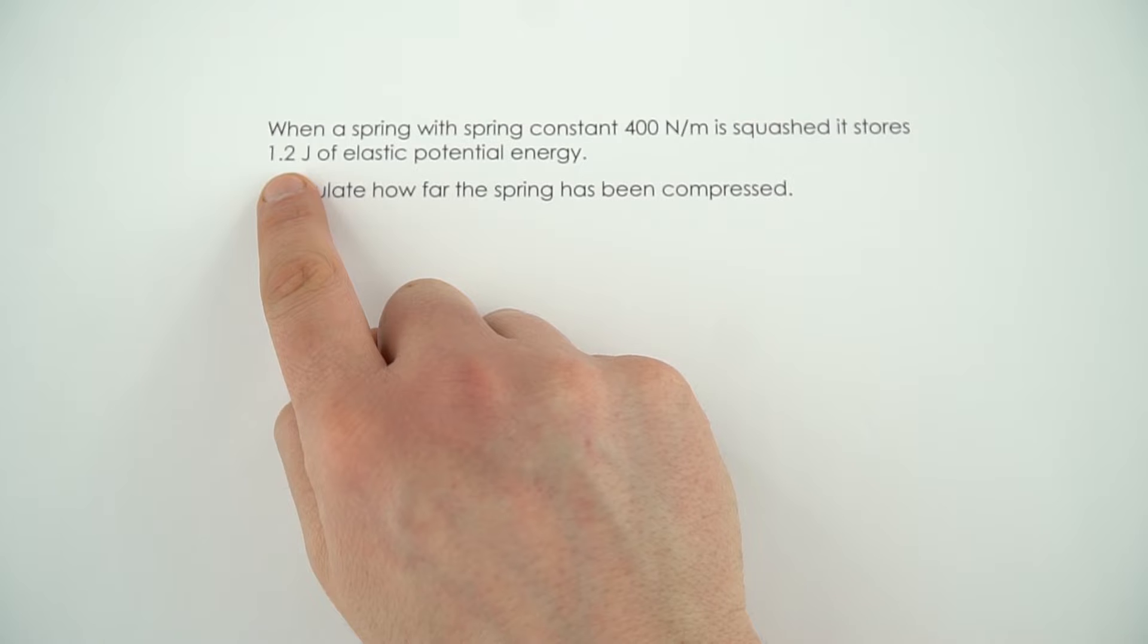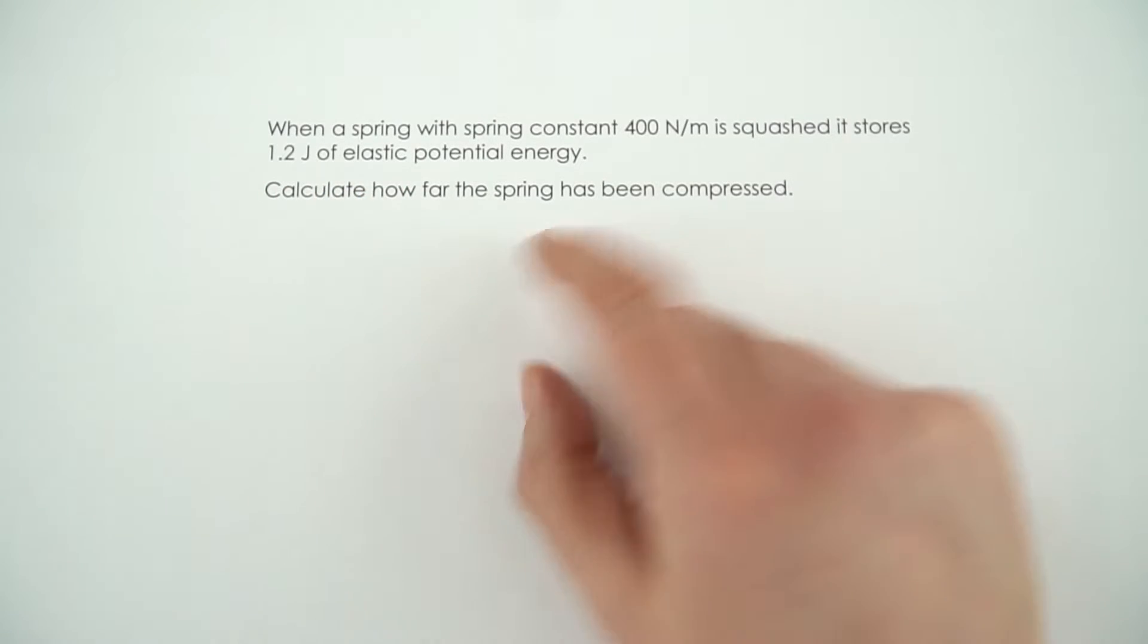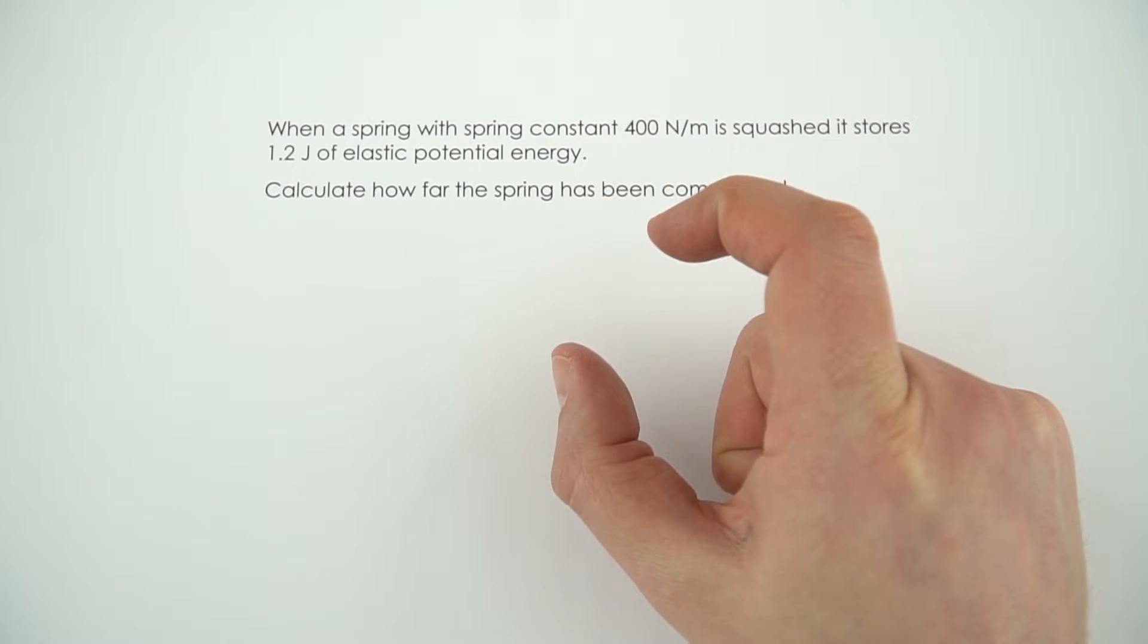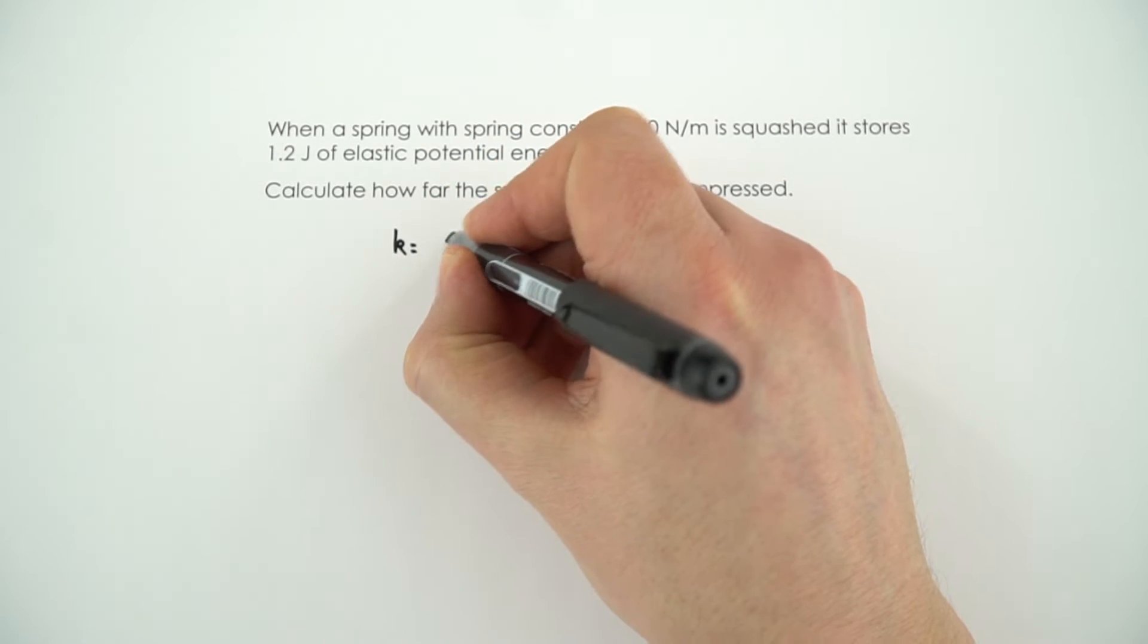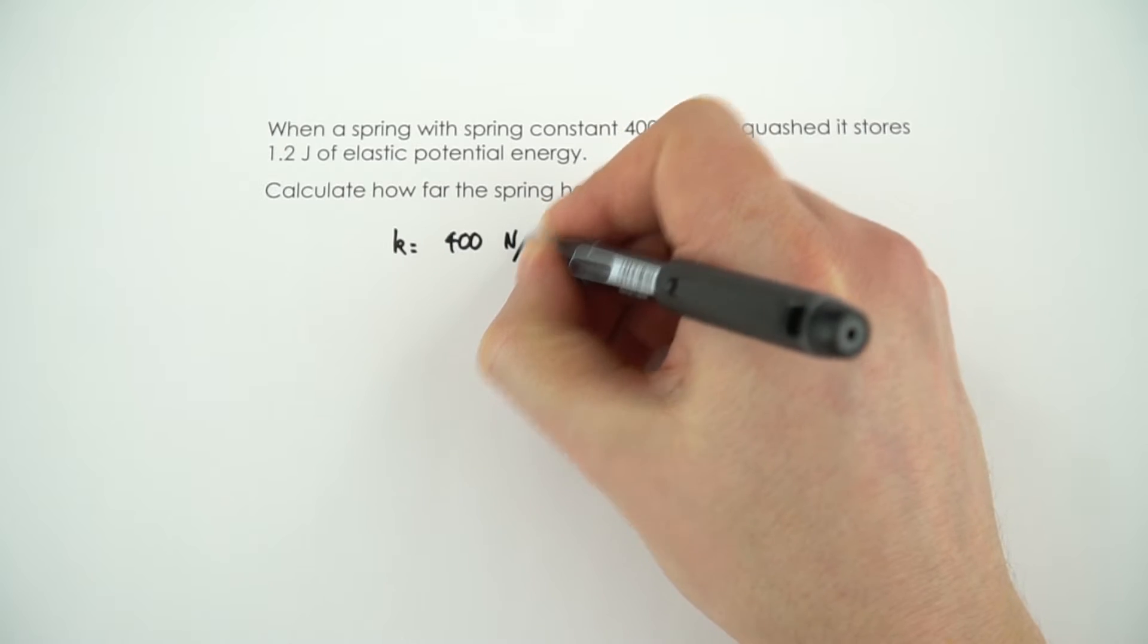And this time it stores 1.2 joules of elastic potential energy, so we need to calculate how far it's been compressed. So I'm just going to write down what I know, and we know that K is equal to 400 newtons per meter.